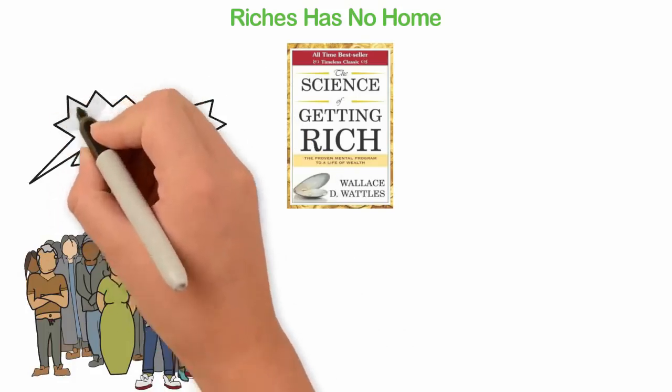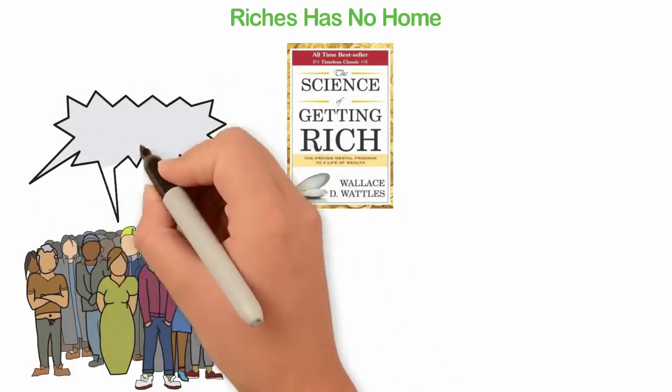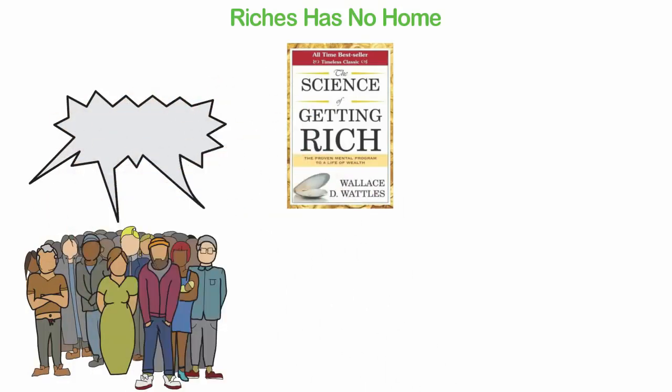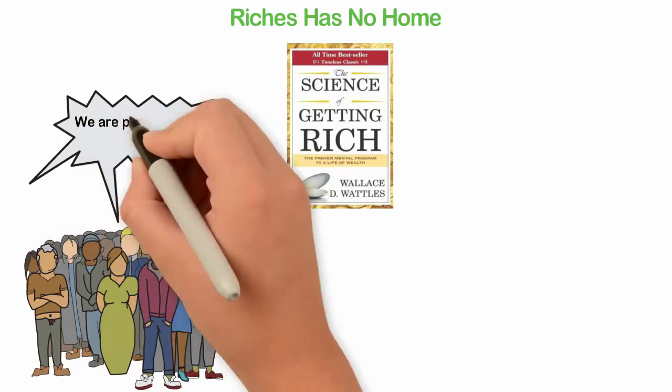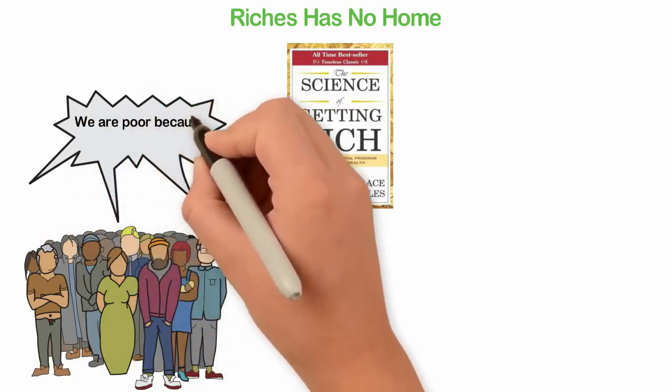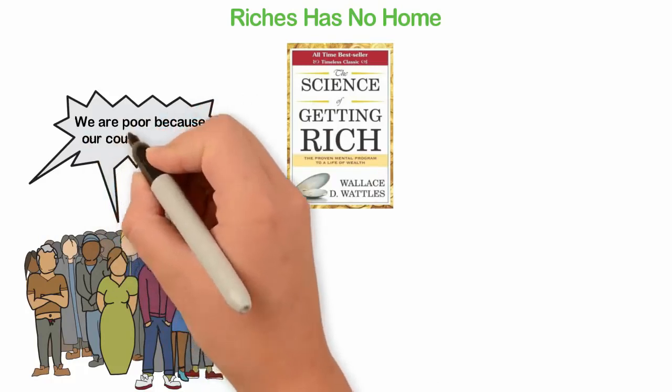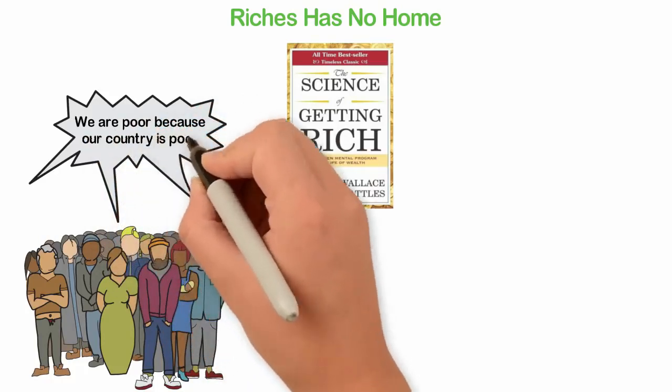But that's not so. As we make this video today, millions of people are poor even in the richest countries of the world. For example, more than 70% of Americans live from paycheck to paycheck, according to some studies.